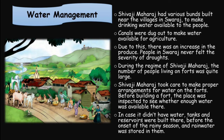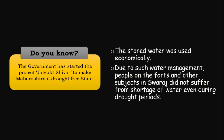The number of people living on forts was quite large. Shivaji Maharaj took care to make proper arrangements for water on the forts. Before building a fort, the place was inspected to see whether enough water was available. If it did not have water, tanks and reservoirs were built there before the onset of the rainy season, and rainwater was stored in them. Do you know? The government started the project Jalyukta Shivar to make Maharashtra a drought-free state.